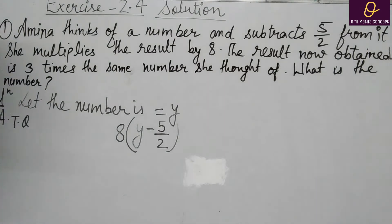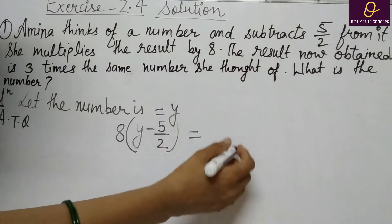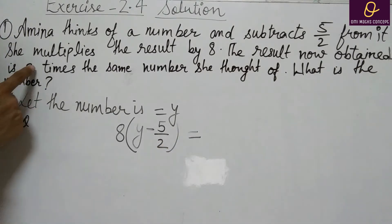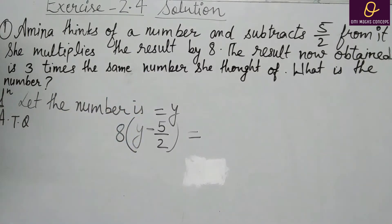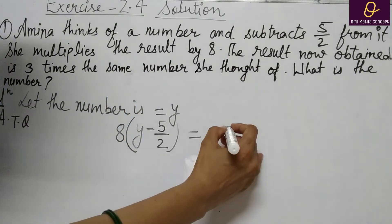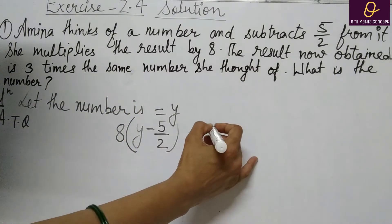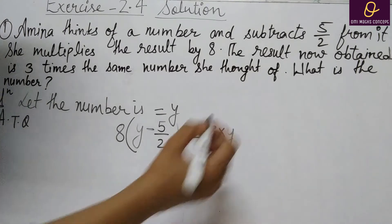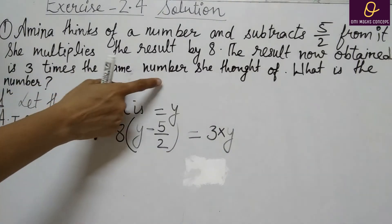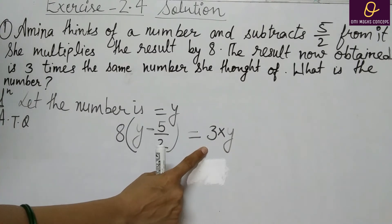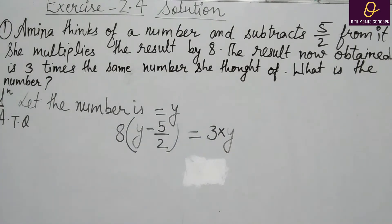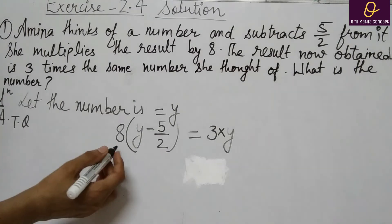The result now obtained is 3 times the same number she thought of. जो number उसने सोचा था उसका 3 times है यह, यानि 3 multiply by y. तो उसके equal है. What is the number? अब आप इसकी value easily बता पाएंगे — इसको solve करना है.